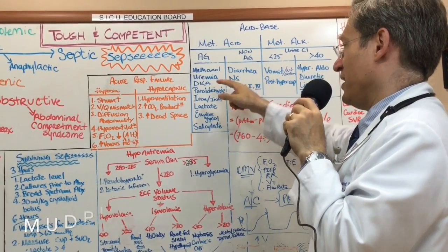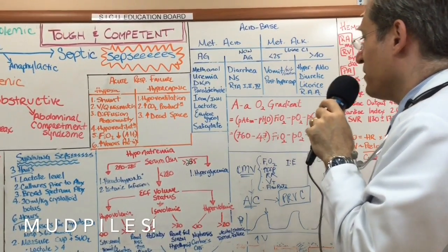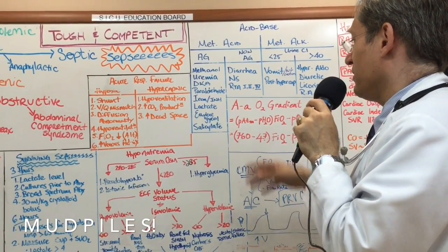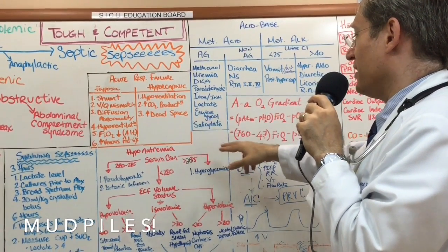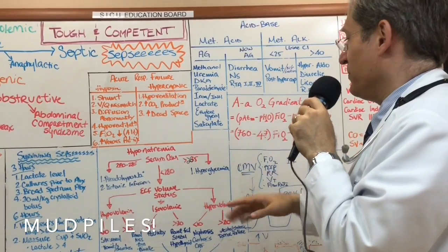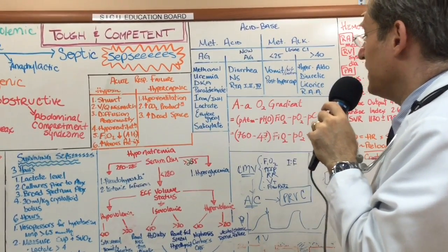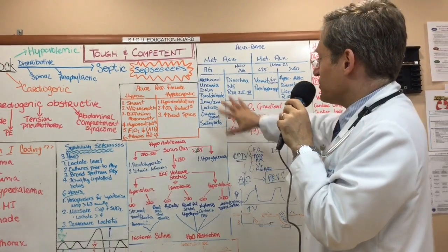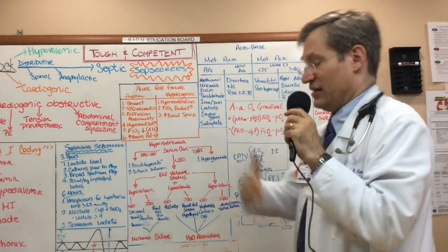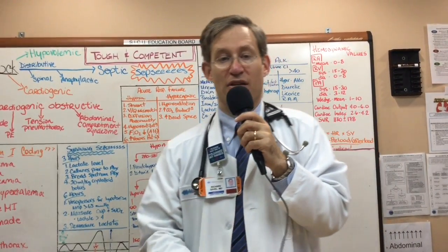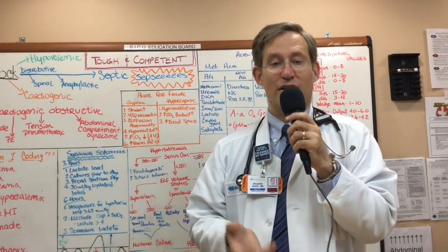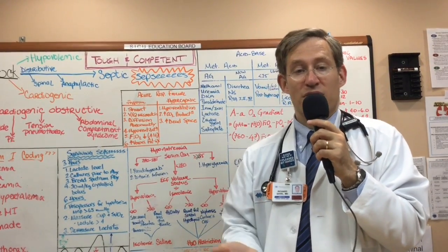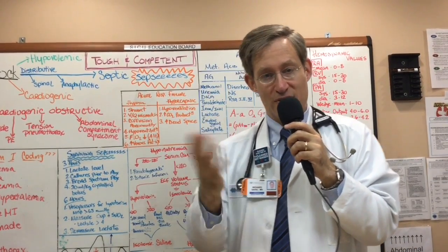MUDPILES: Methanol, Uremia, Diabetic ketoacidosis, Pyraldehyde, Iron or INH, Lactate, Ethylene glycol, and if you want to get fancy, salicylate toxicity with a metabolic acidosis and respiratory alkalosis. The most important cause in this unit is an elevated serum lactate from patients who have some form of shock — most of the time severe sepsis syndrome and septic shock. The goal is not just treating the acidosis, but figuring out why the patient is acidotic and treating the underlying cause.